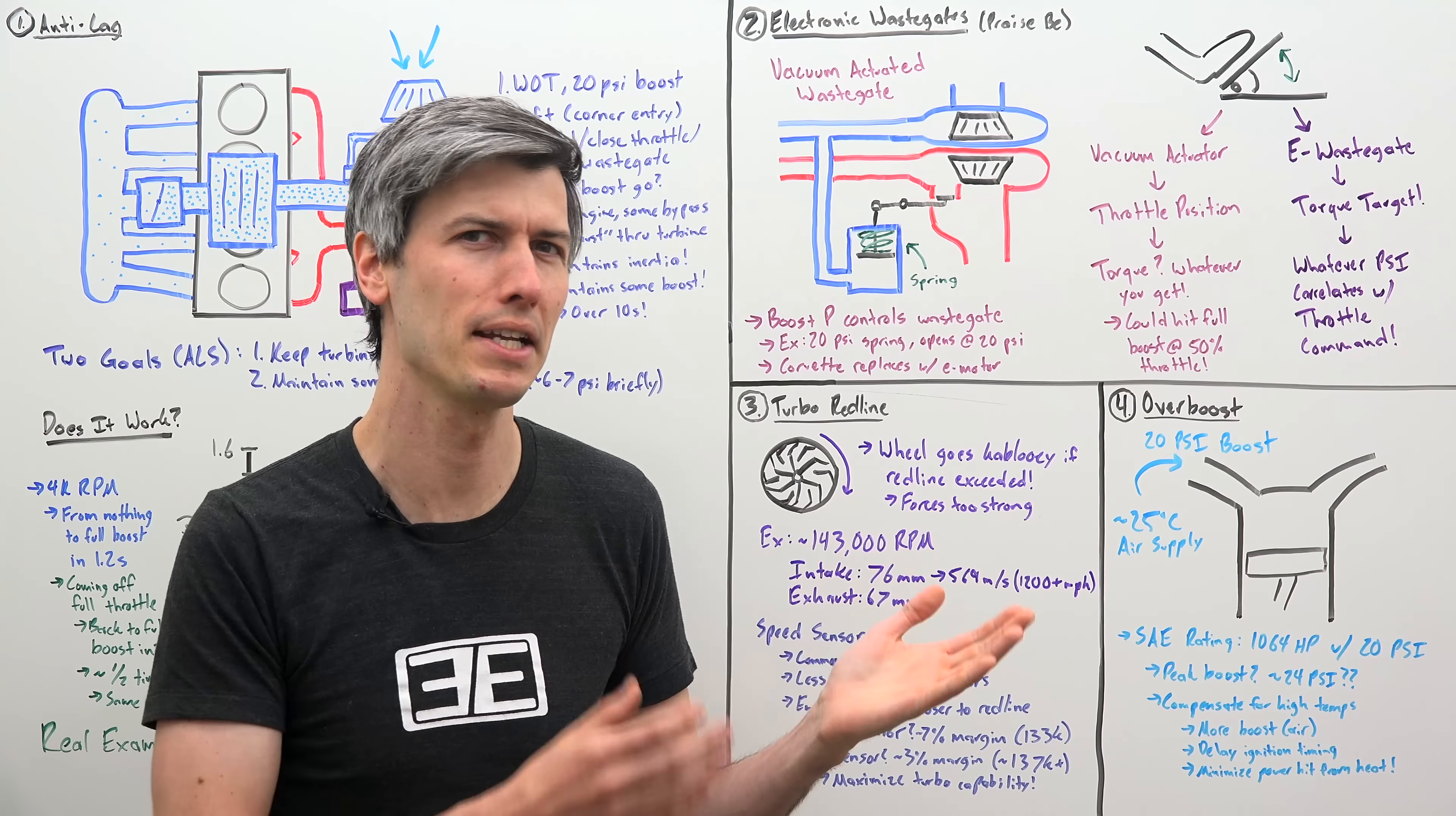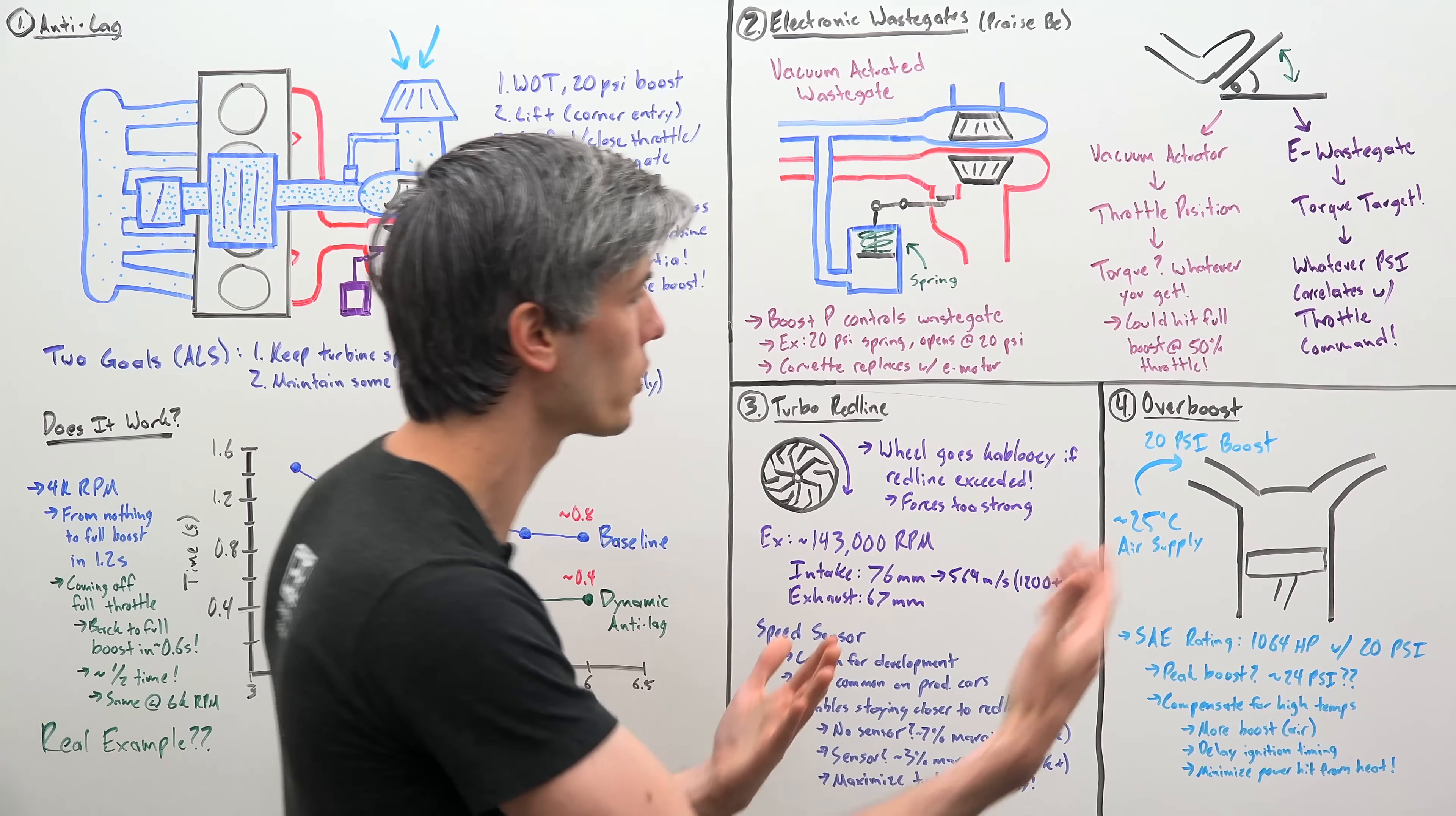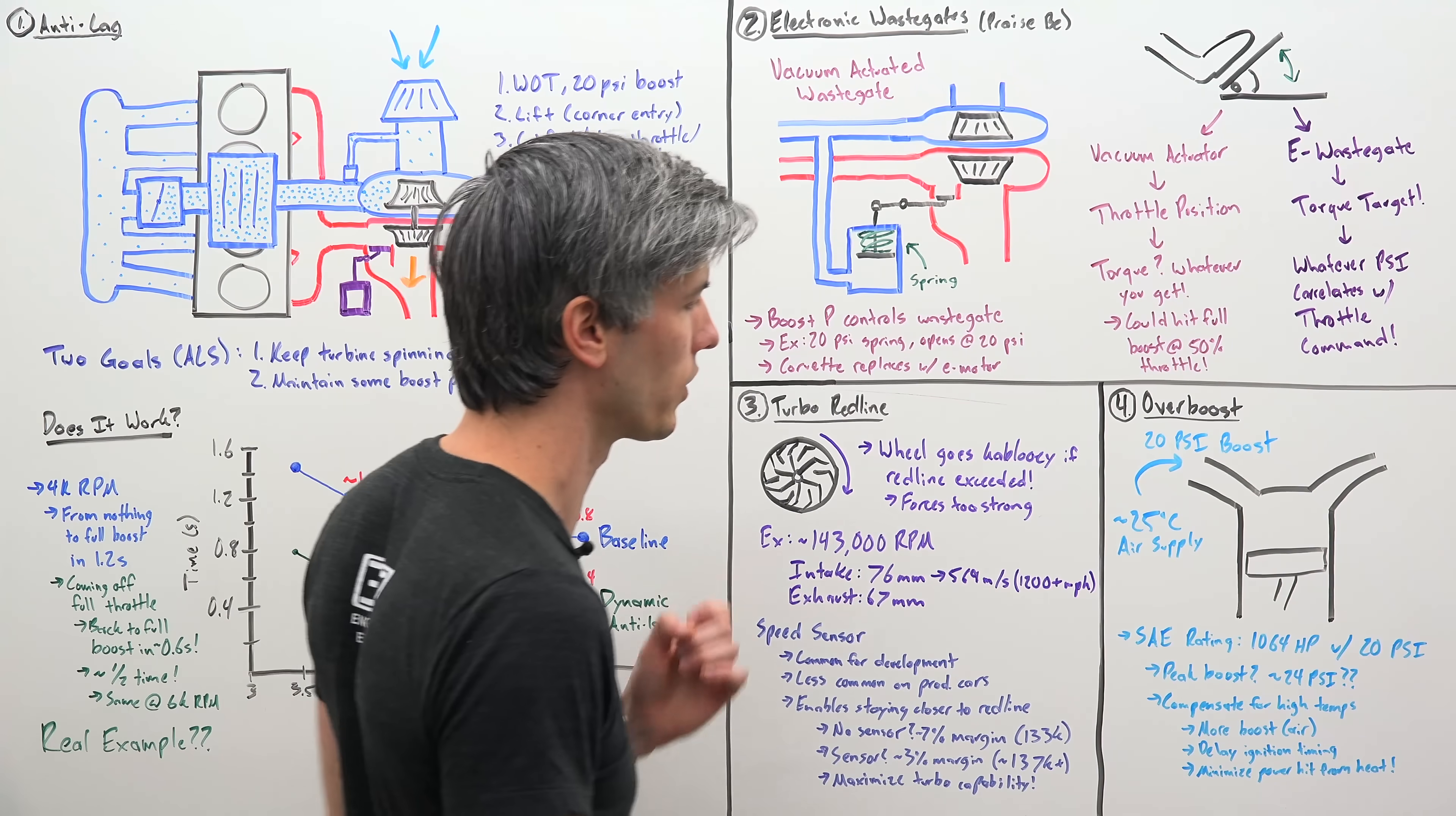Now you might think, well that means its peak boost is 20 psi, but it is not. Actually that number is closer to about 24 psi. Now why is that? Well, when you're doing the certification for how much an engine makes, you have standards as far as what air temperature that should be. So your air supply should be at about 25 degrees Celsius, or you correct for 25 degrees Celsius. So with that air temperature and 20 psi boost, this engine makes 1,064 horsepower.